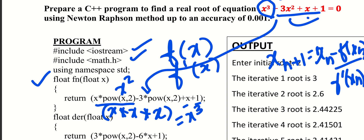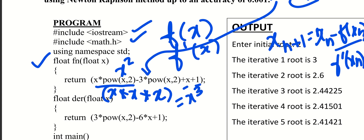So the derivative function is equal to f dash of x. We add 3 into pow(x, 2); the derivative of 3x square is equal to 6x. So f dash of x equals 3x squared minus 6x plus 1.